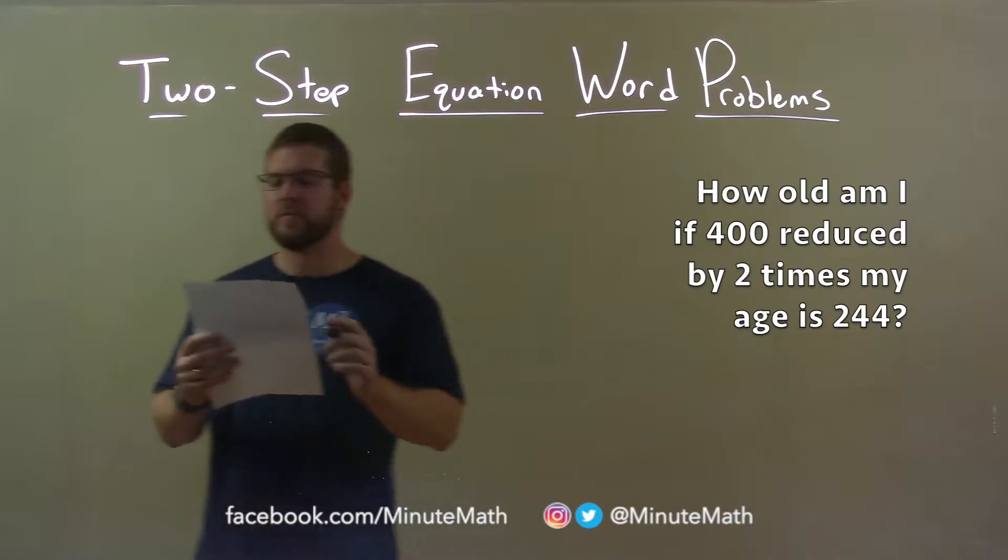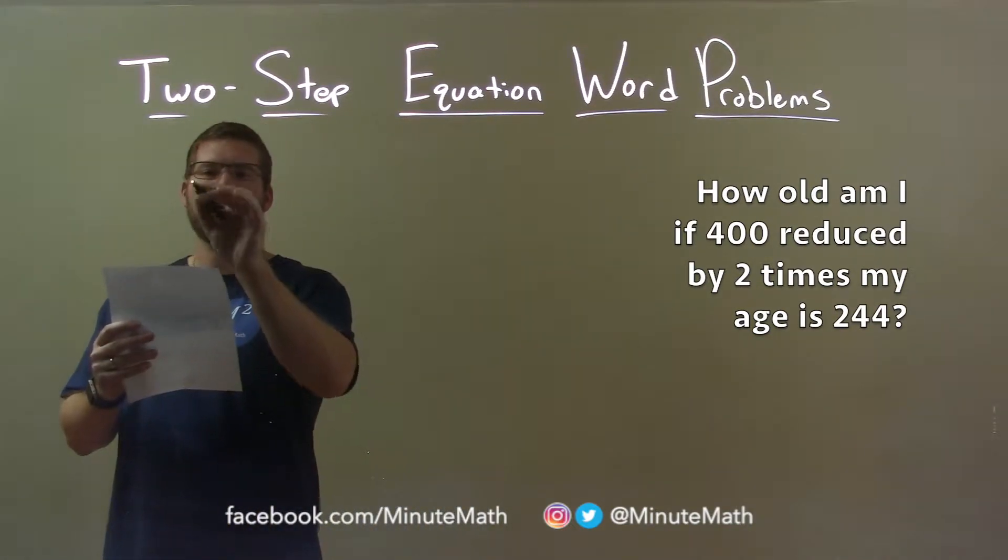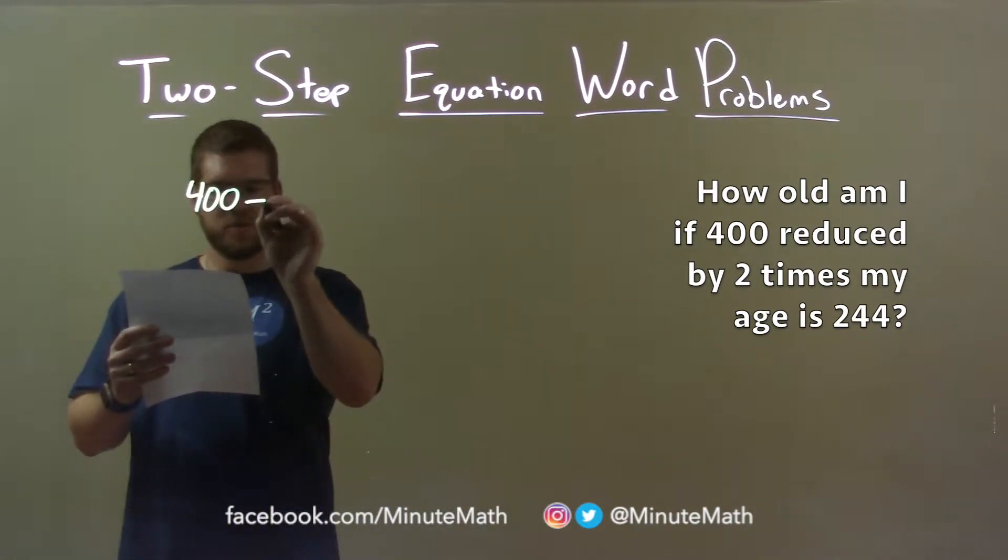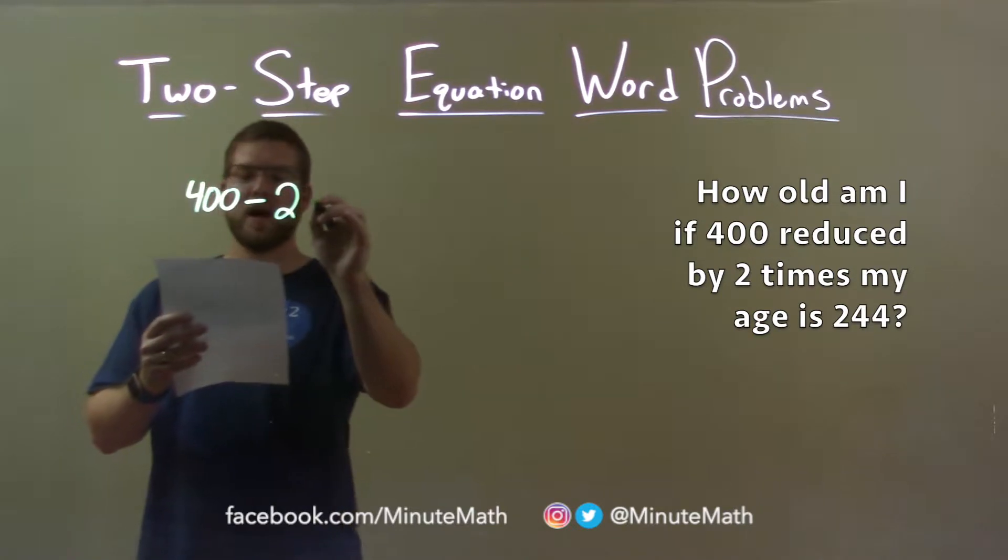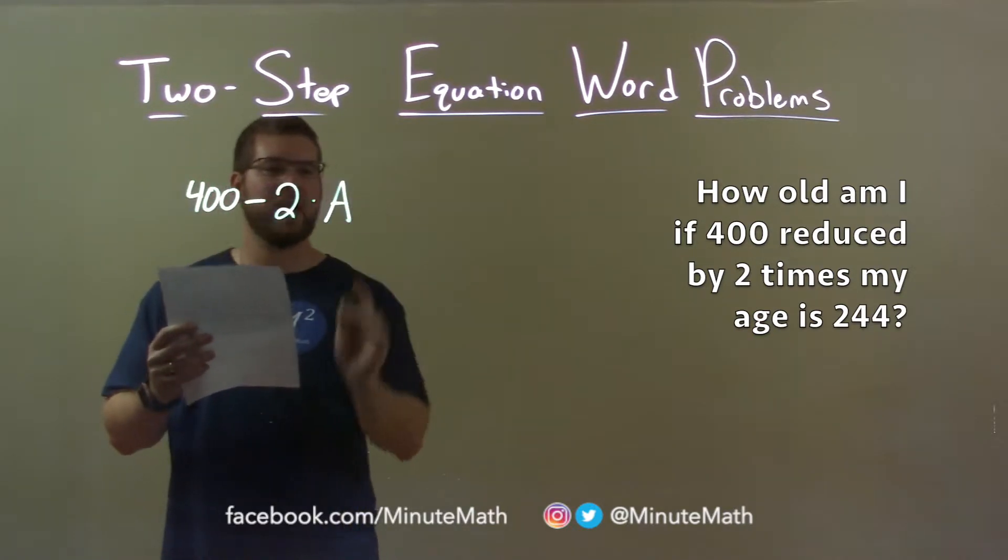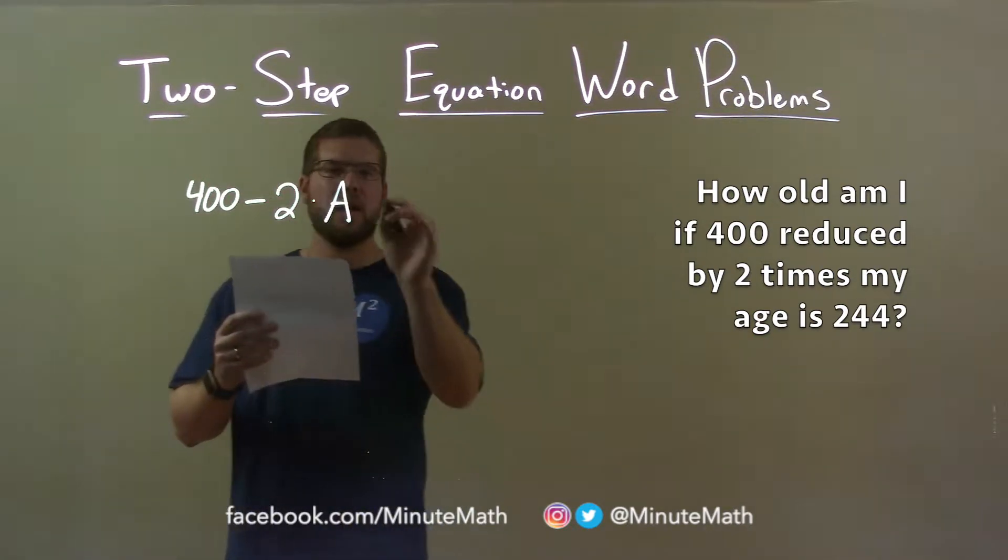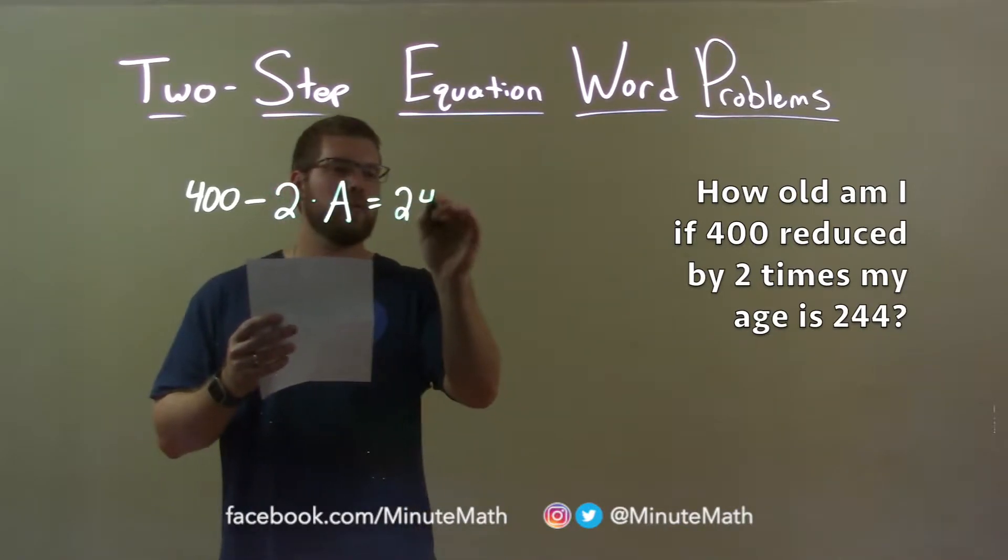Let's create an equation. So, 400 reduced by two times my age, where A represents my age, and that equals 244.